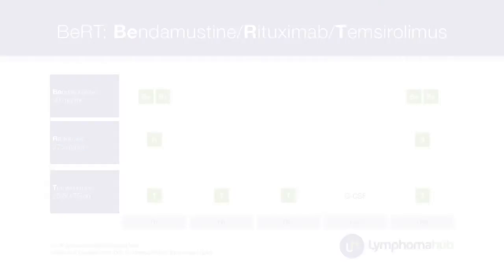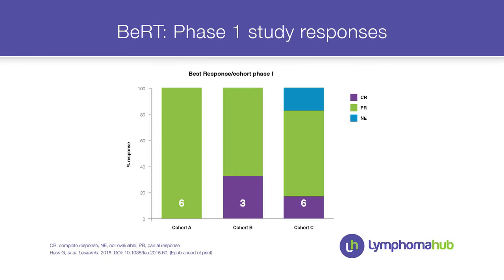Alternatively, we had in vitro data showing synergism between bendamustine plus temsirolimus, and this is exactly what we applied. This gentleman was part of a phase one trial which has since been published. To make a long story short, all patients in this phase one cohort responded to this combination.